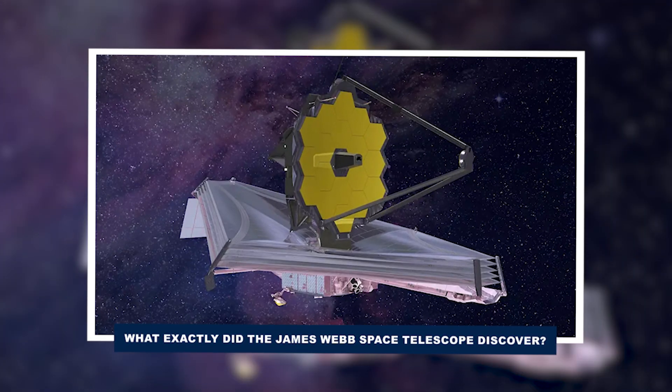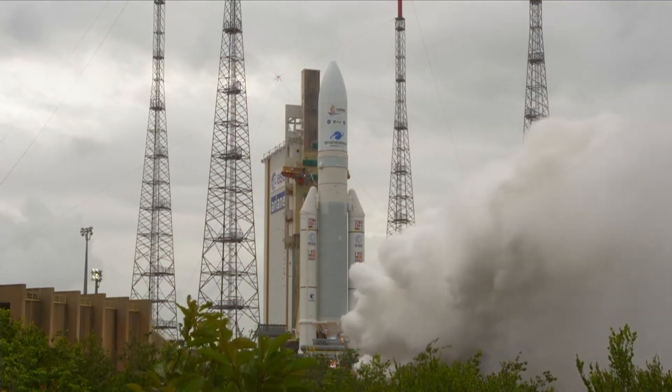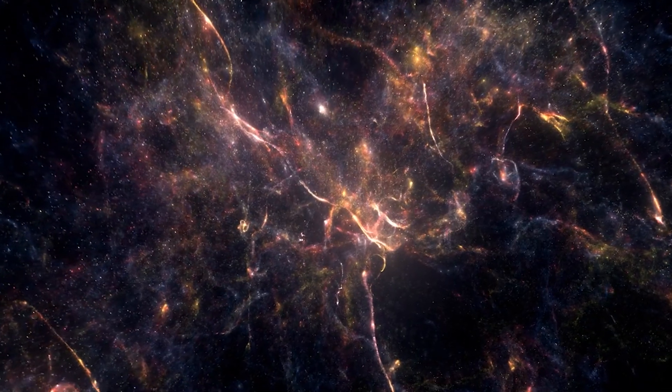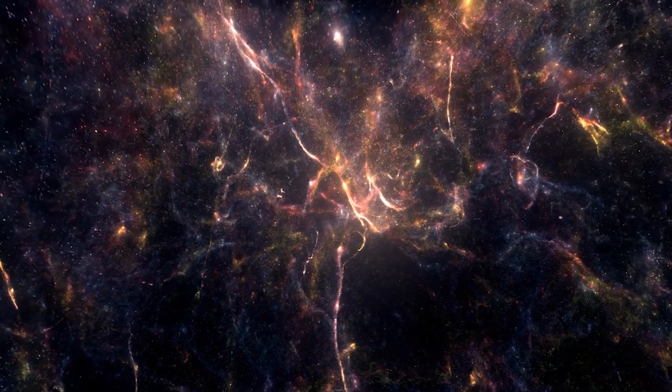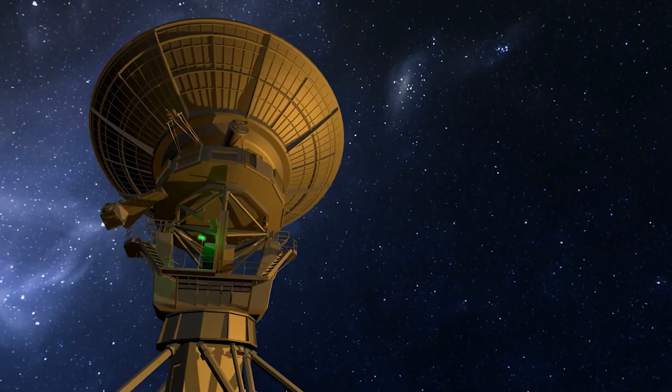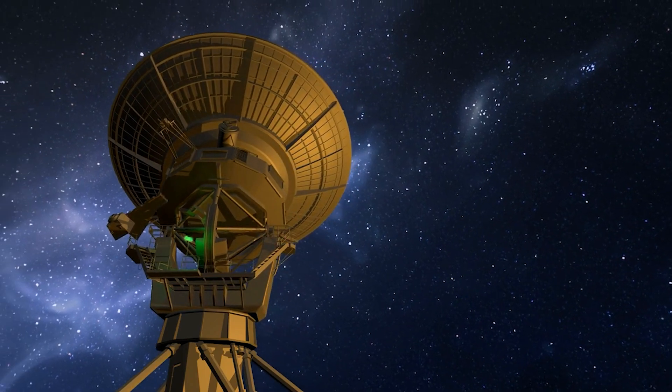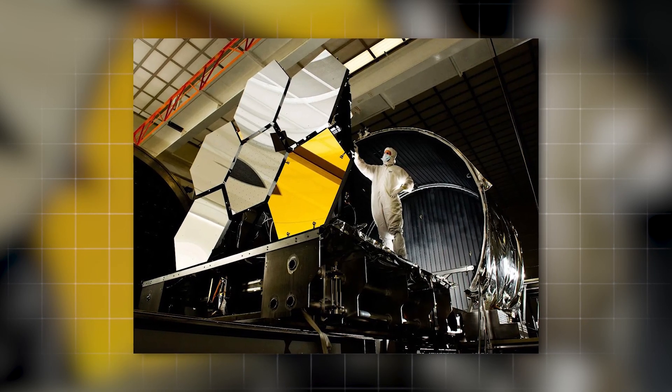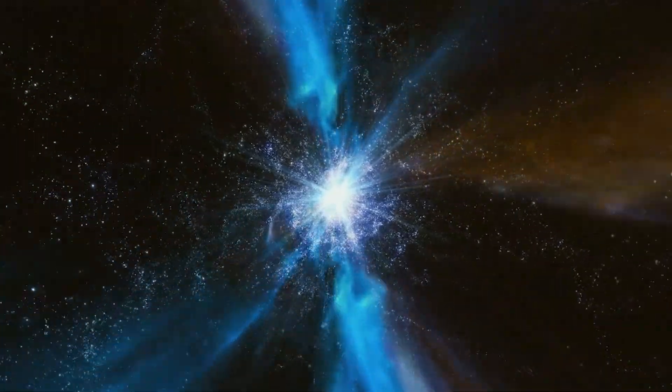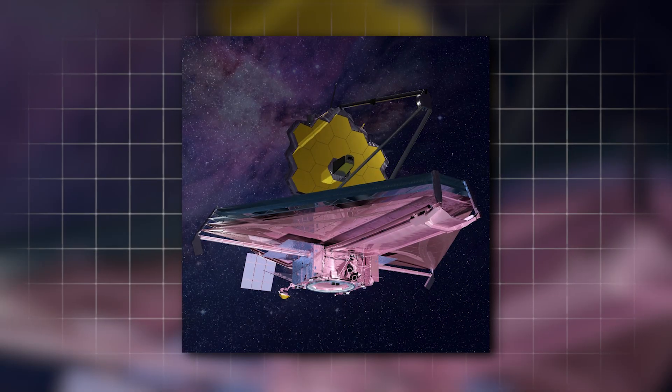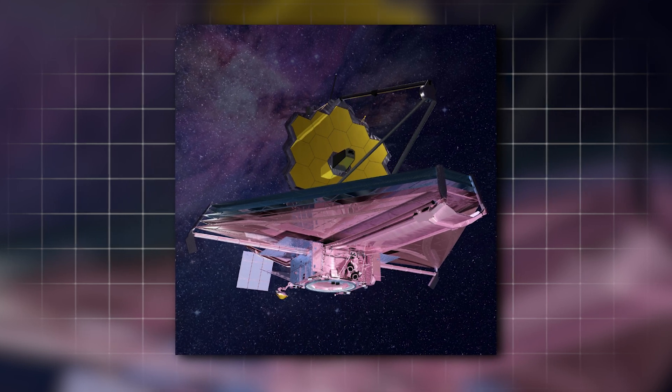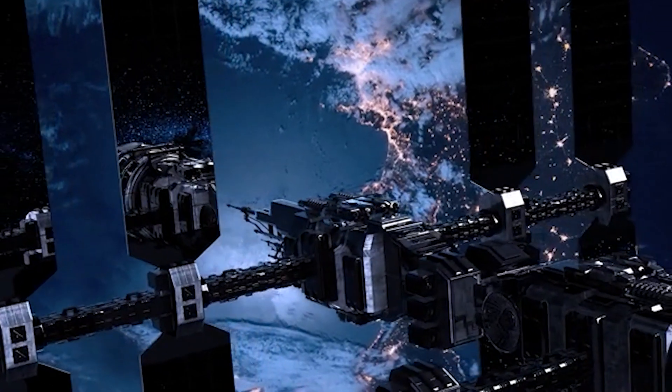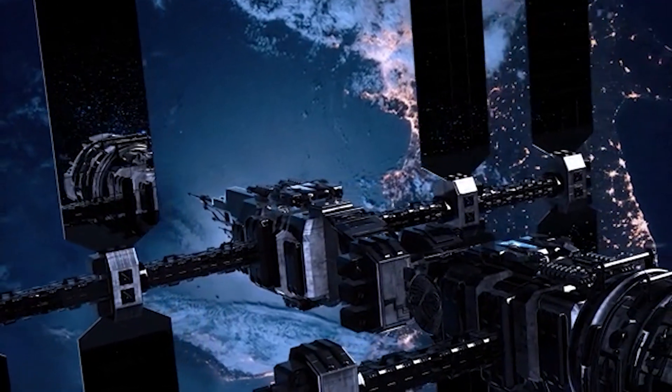What exactly did the James Webb Space Telescope discover? The James Webb Space Telescope, launched in December 2021, has transformed the world of astronomy with a string of pioneering discoveries that are transforming our knowledge of the universe. As the most sophisticated space observatory to have been constructed, JWST is armed with unprecedented infrared capabilities that allow it to look further into space and see distant objects in unprecedented detail. The discoveries of the telescope run the gamut from the origins of the first galaxies to dark energy and even the possibility of life beyond Earth.